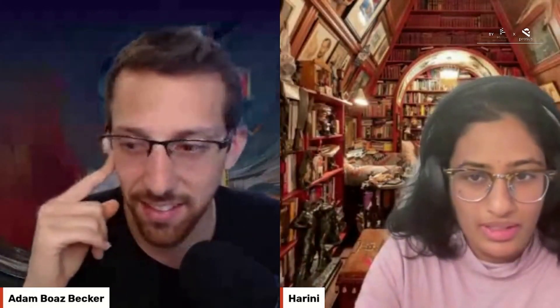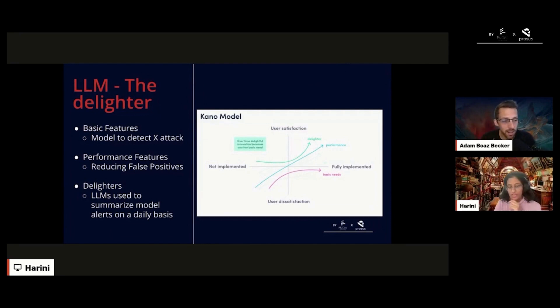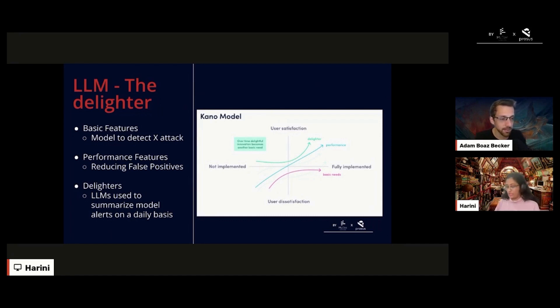Can we go a bit deeper into the Kano model slide — specifically the idea that over time, delightful innovation becomes another basic need. What does this say about the urgency with which people should be trying to adopt these new technologies? On one hand, being quick to delight can impress customers; on the other hand, moving too quickly might introduce dissatisfying experiences.